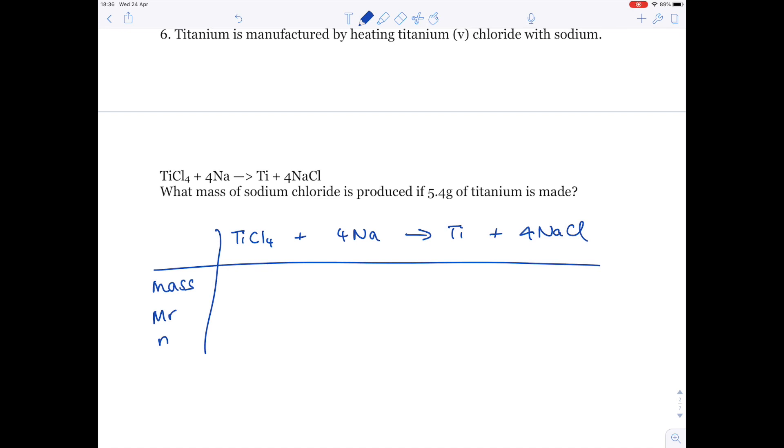We're looking for the mass of sodium chloride, so that's X. We've got 5.4 grams of titanium being made. Now, we need to pop in our MRs of both titanium and the sodium chloride. That's 48 grams. For sodium chloride, you want to do 23 plus 35.5, ignore the 4, to get 58.5. We'll look at the 4 very shortly.